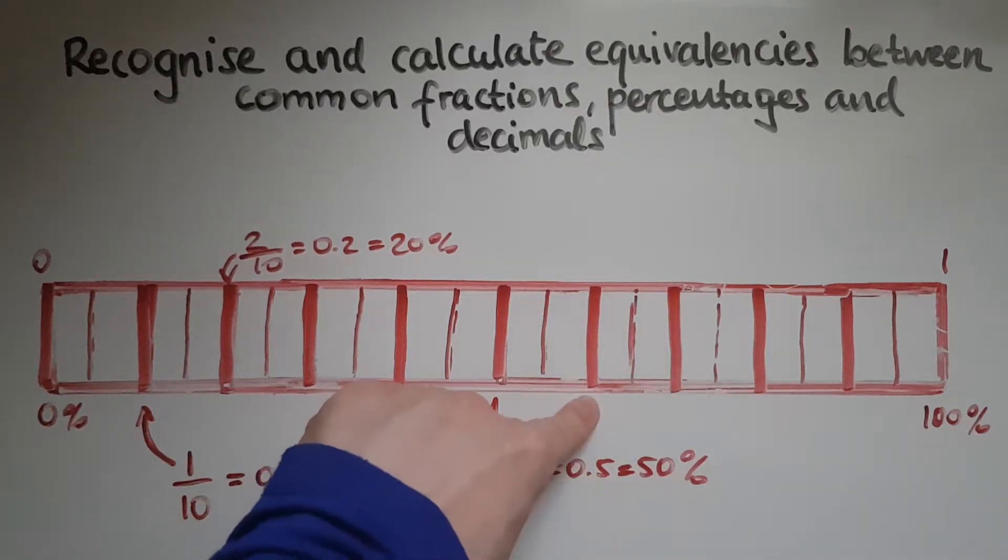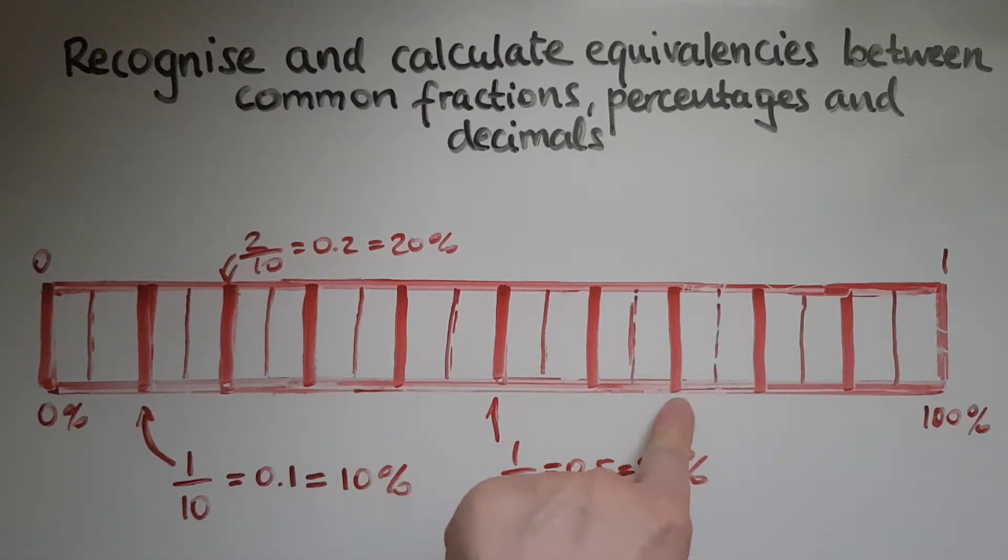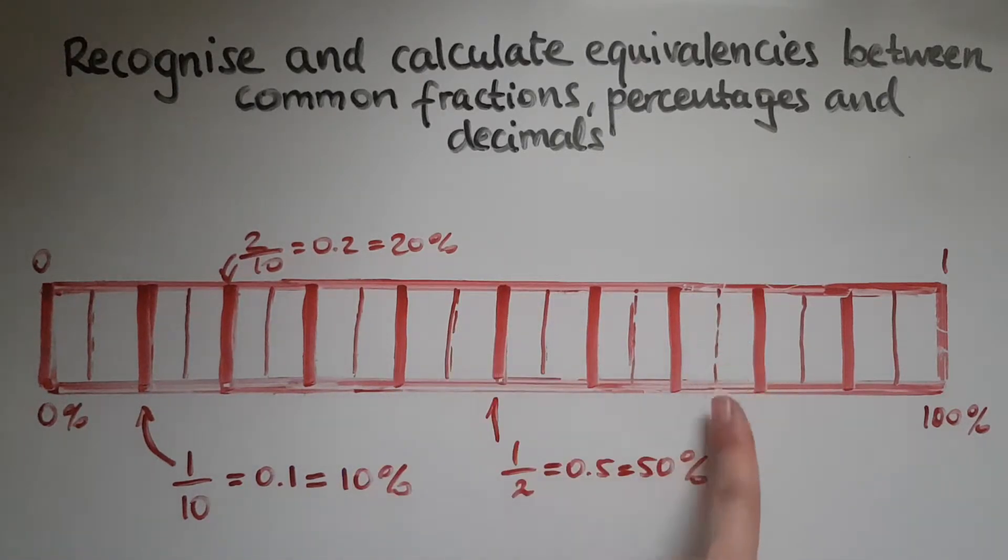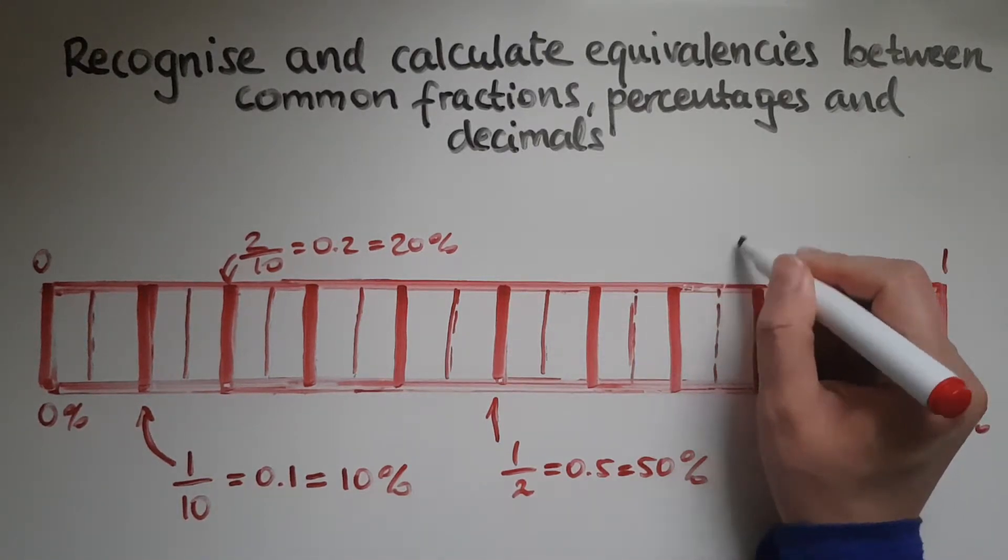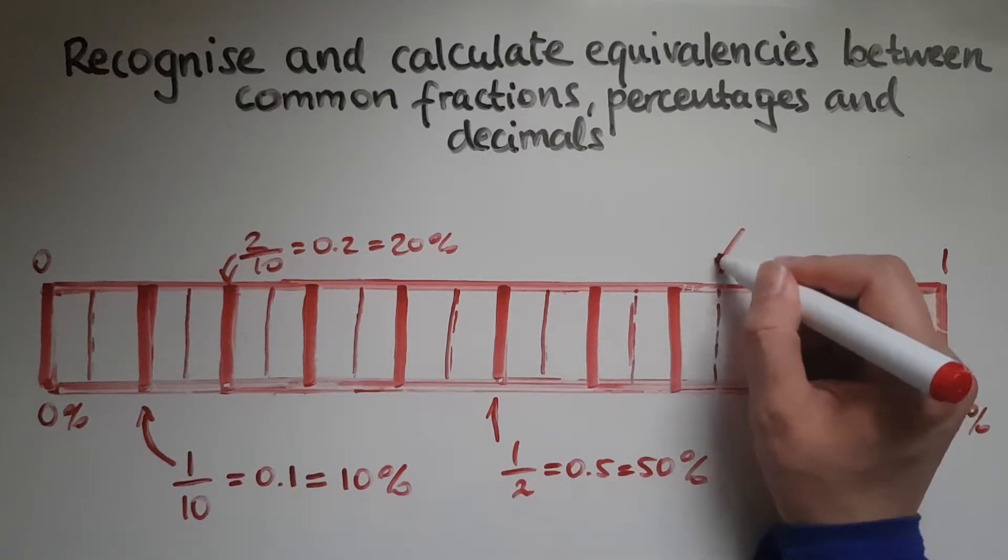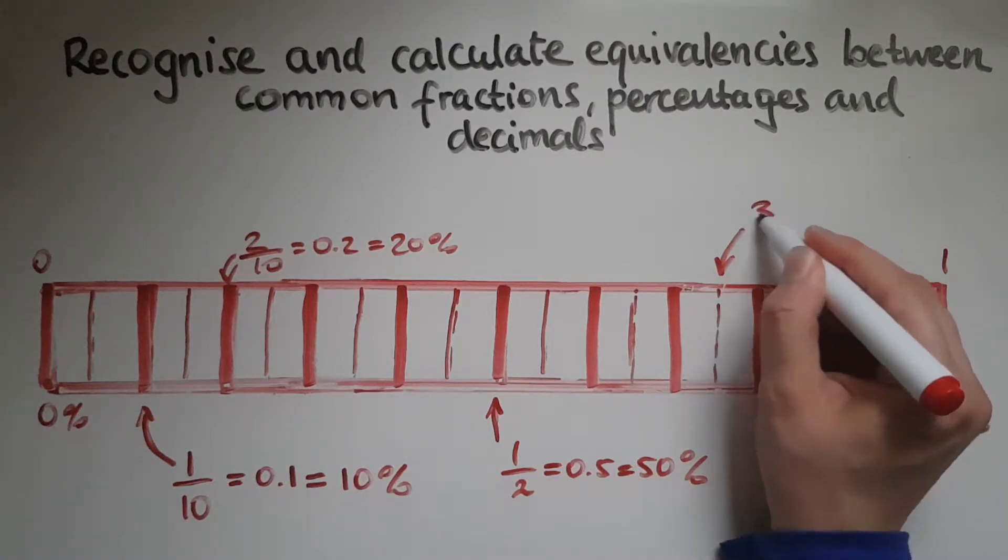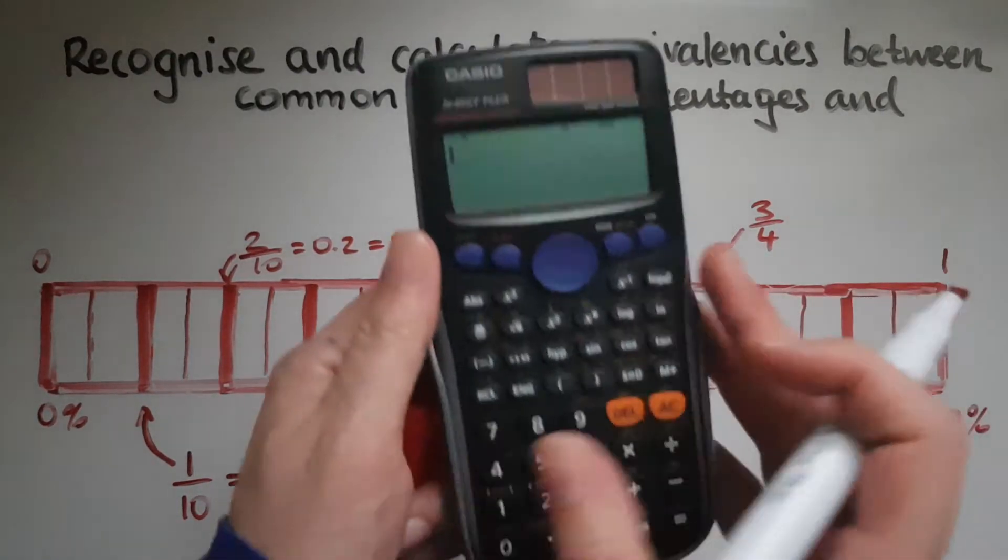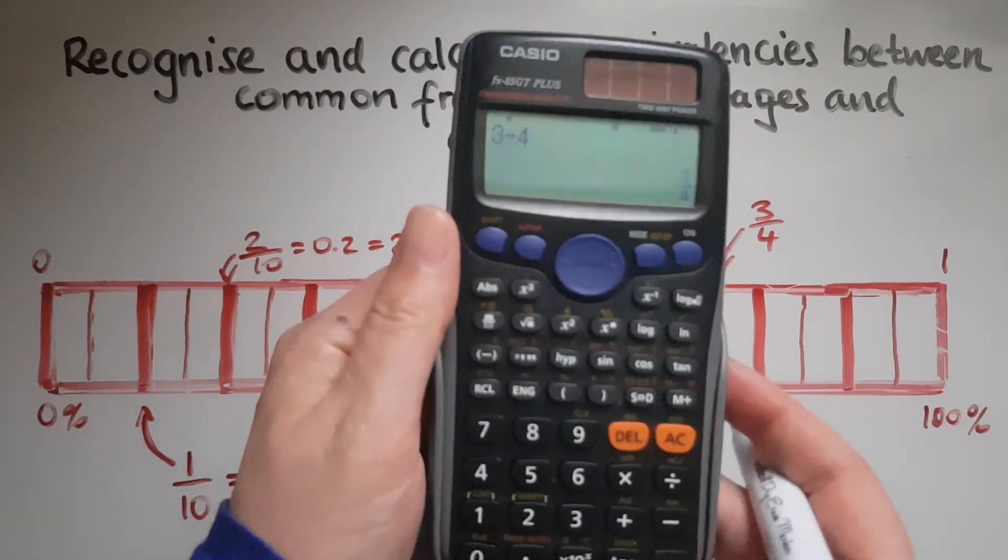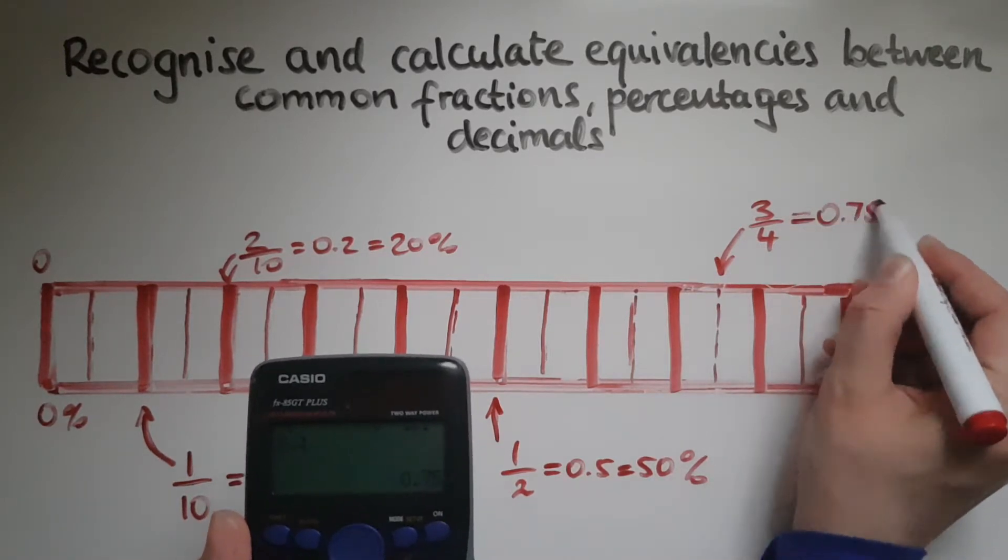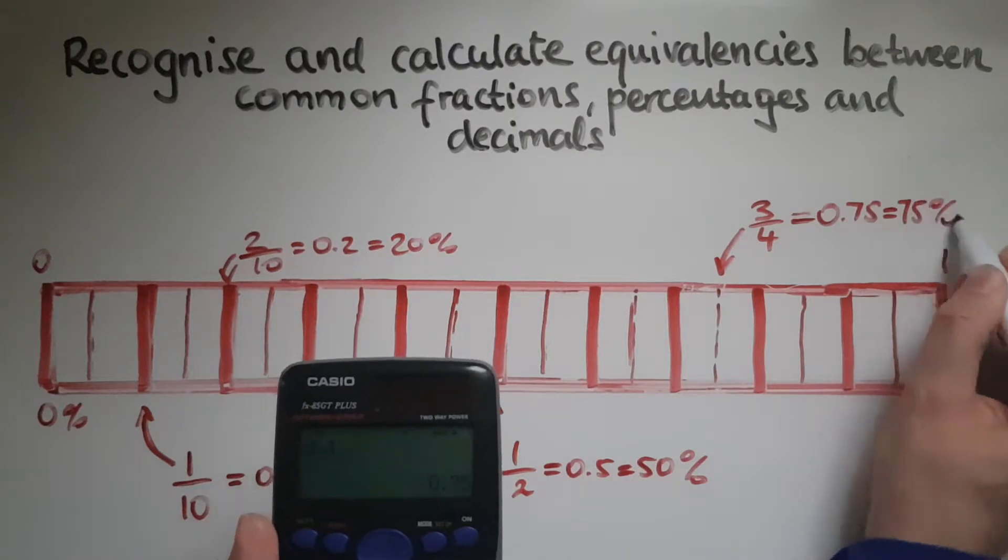So half is 1 out of 2 which we write as 0.5 and that is 50% as well. This would be 6 out of 10 which is 0.6 or 60%. This would be 70%, 7 out of 10 or 0.7. And this would be 75%. It is 75 out of 100, it is 0.75 and it is also 3 quarters, so 3 out of 4. If you do this with the calculator as well, that gives us 3 quarters which is 0.75, and that is 75% as well.